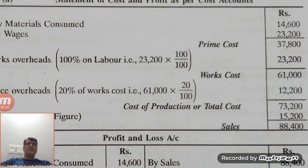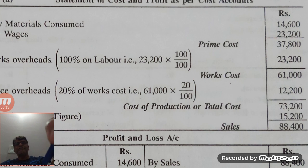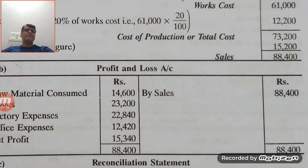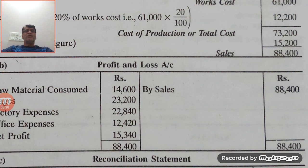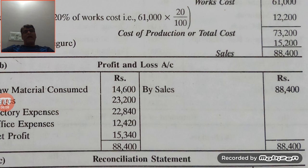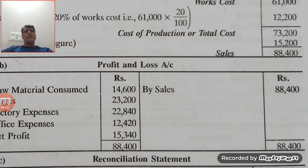Now we prepare the profit and loss account. Material consumed as given in the question is 14,200; wages 23,200; factory expenses 22,840; office expenses 12,420. Sales are 88,400. Deducting all expenses from sales gives a profit of 15,340 rupees. So there is a difference: cost book profit is 15,200 and financial book profit is 15,340.